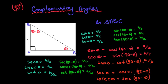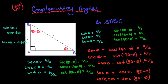So what does this mean in reality? For example: sin 30 equals cos 60 (since 30 and 60 make 90); tan 40 equals cot 50 (since 40 and 50 make 90); sec 20 equals cosec 70. You can start to see these similarities by looking at complementary angles.